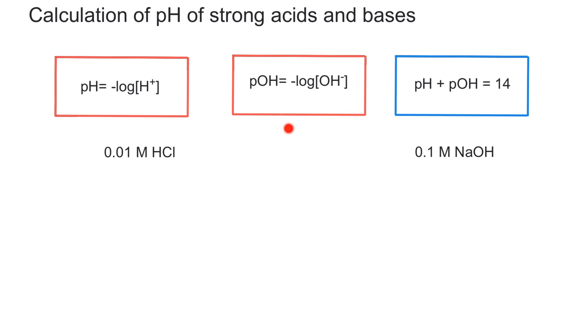So now that you know these three formulas, what we're going to do is solve two different examples. One in which we have a strong acid such as HCl and one in which we have a strong base such as NaOH. So let's see how to solve that. We're going to start with the strong acid. As you can see here, we have 0.01 molar of HCl. So this is the concentration of the acid.